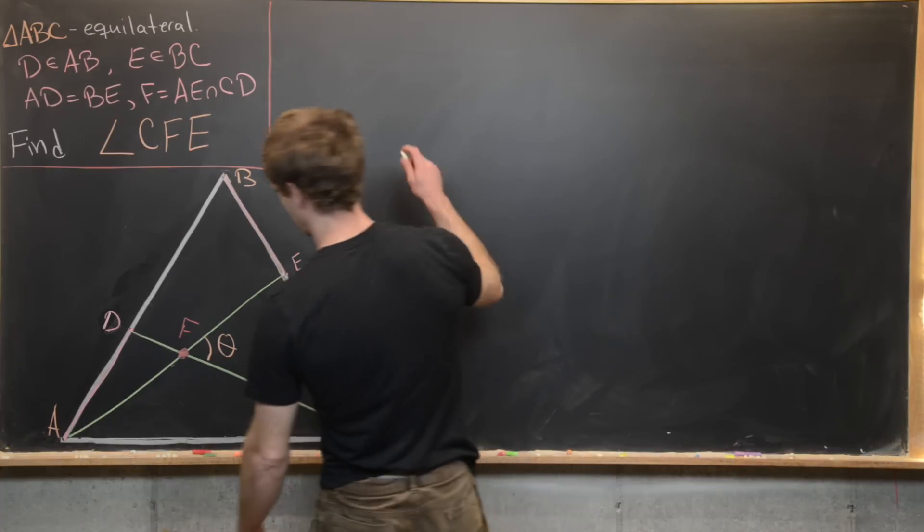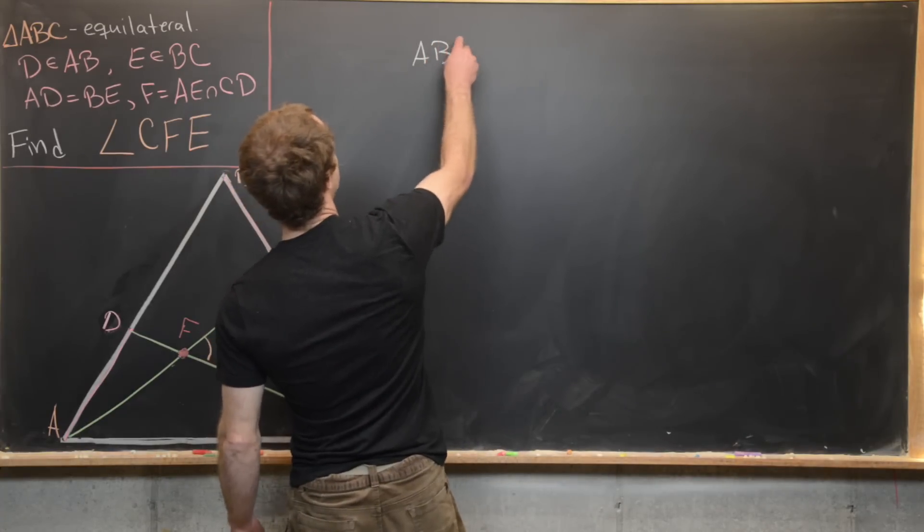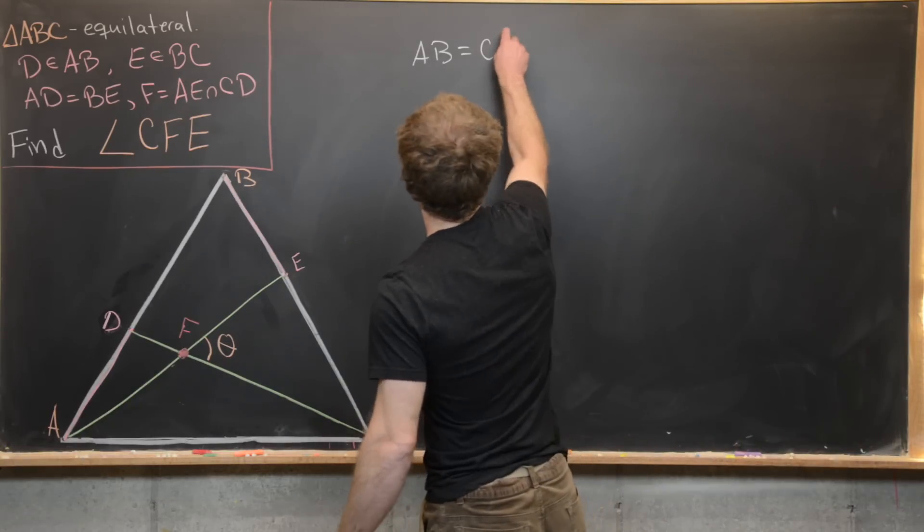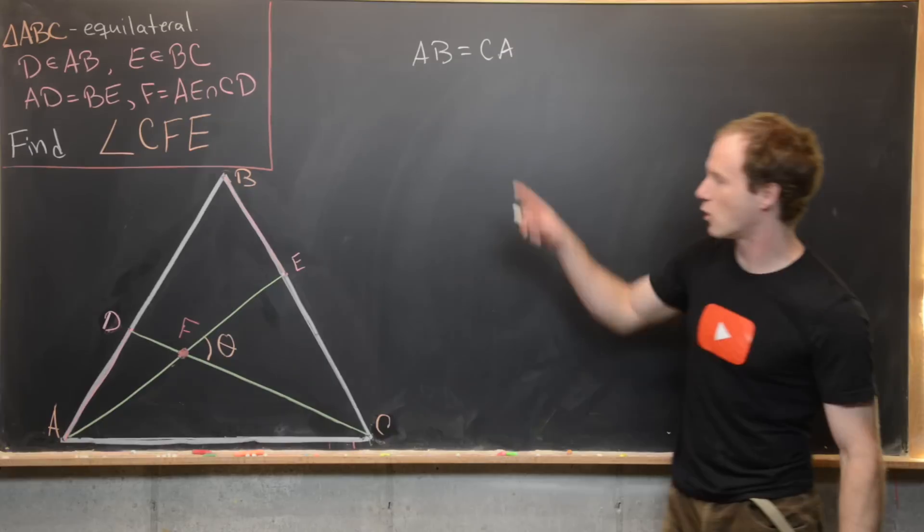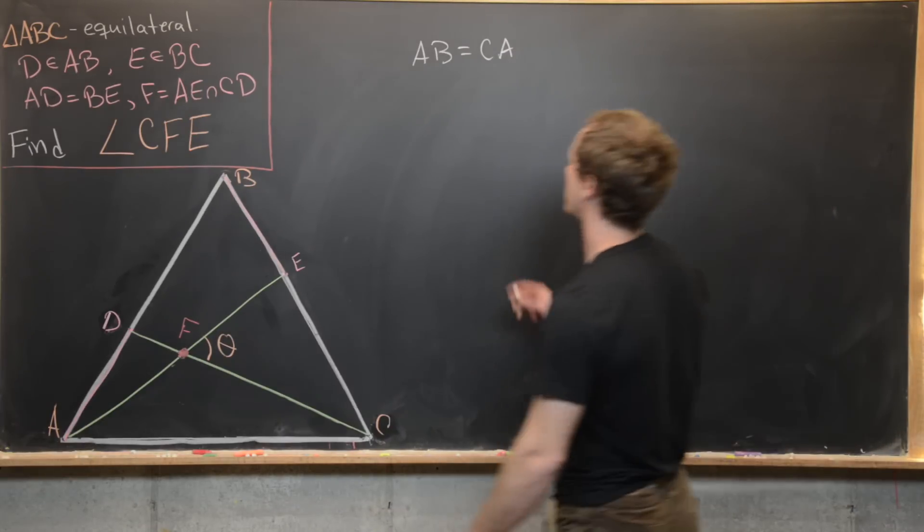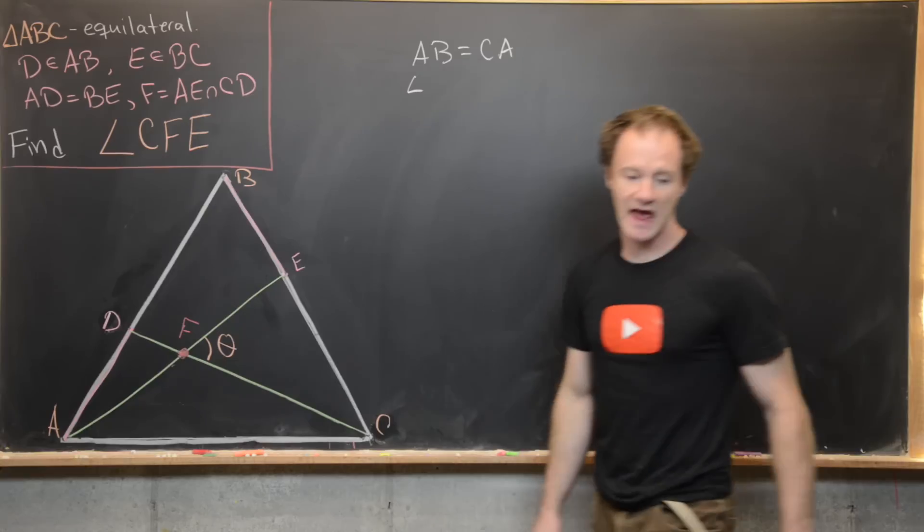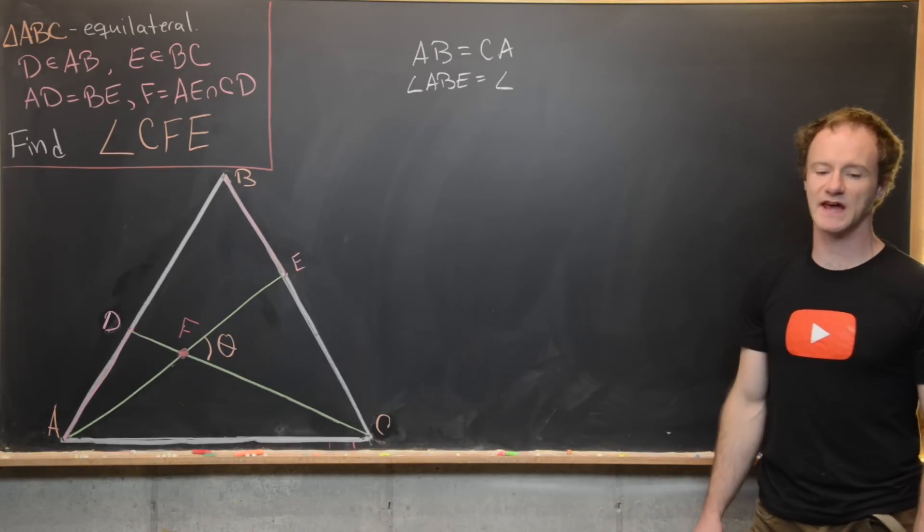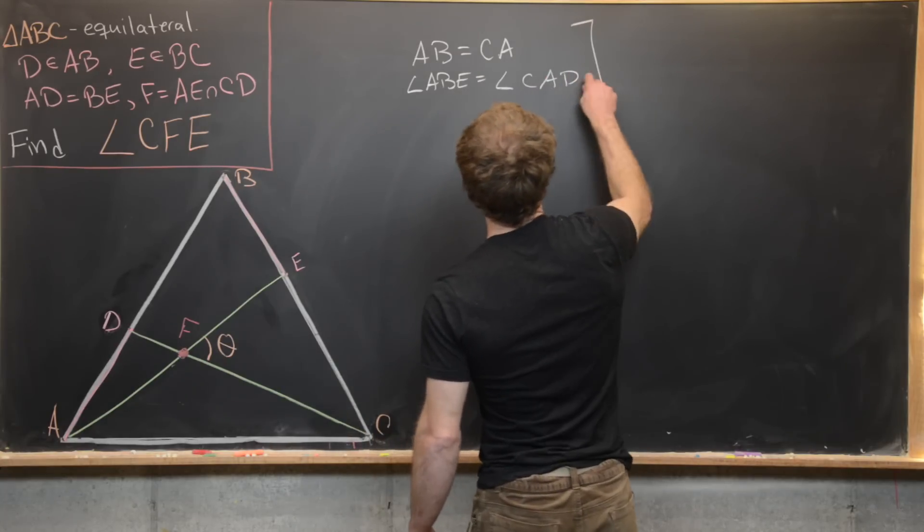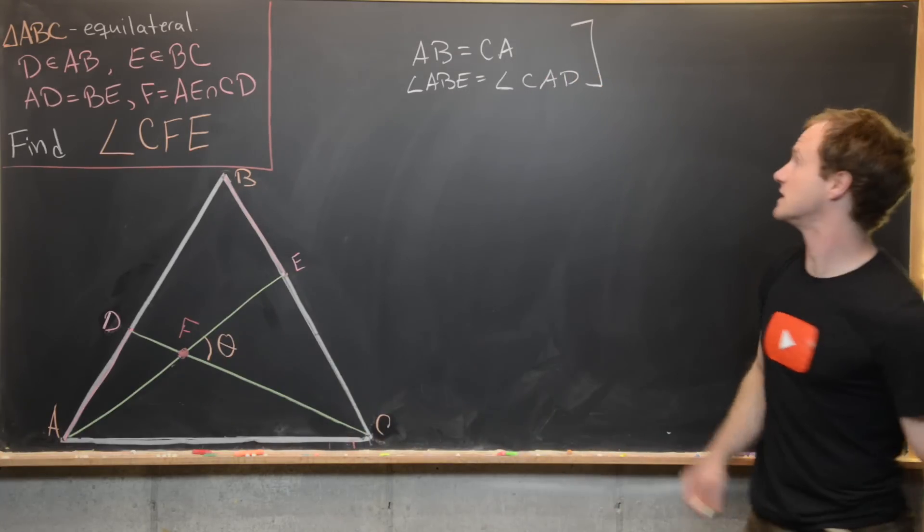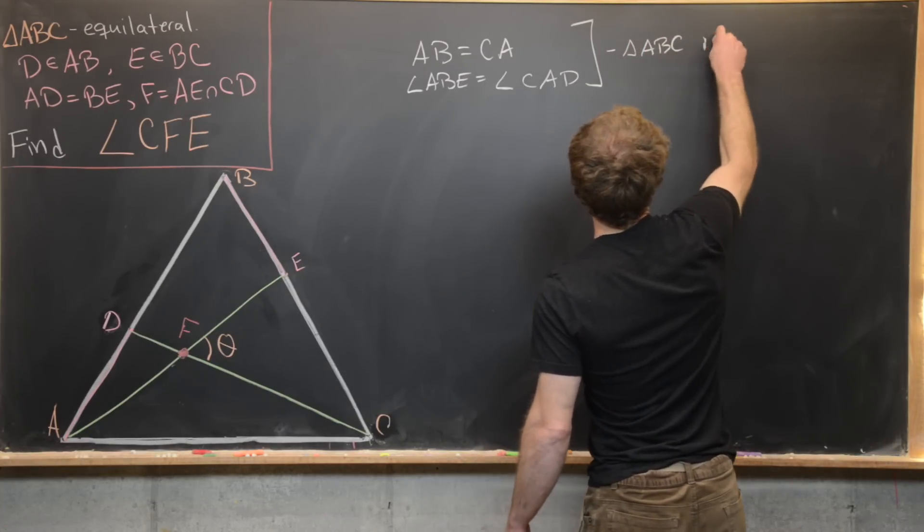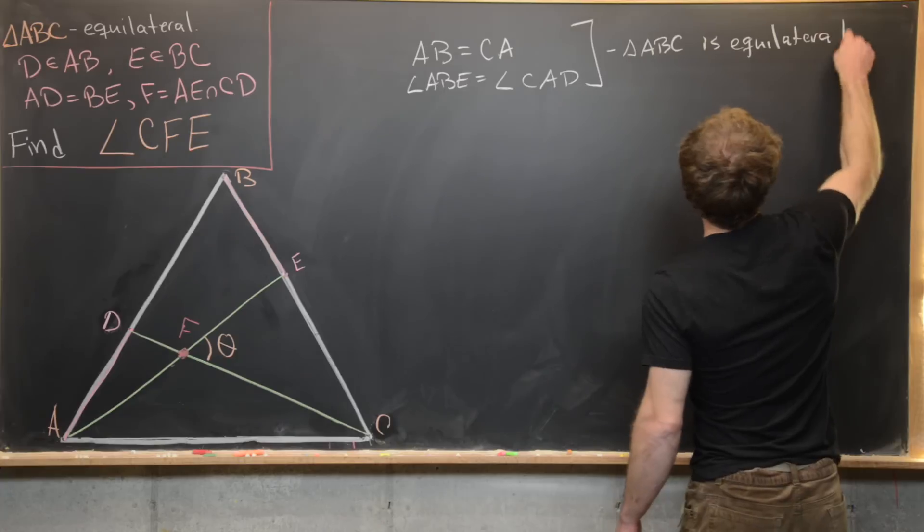So I first want to notice that AB, that line segment, is congruent with CA. And that's because our whole big triangle ABC is equilateral. And then furthermore, we have angle measure ABE is equal to angle measure CAD. Okay. So both of those are equal to 60 degrees. And again, these two facts come from the fact that triangle ABC is equilateral.